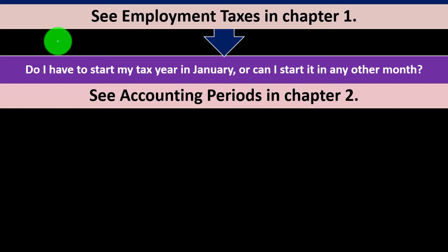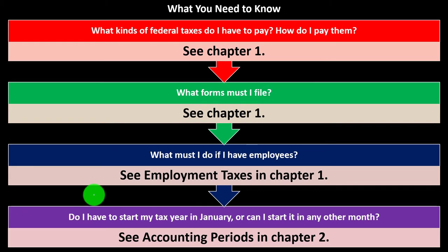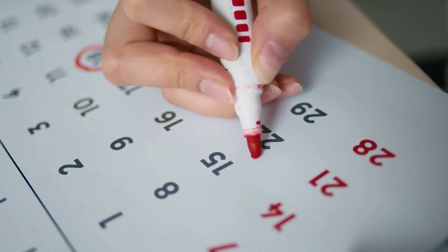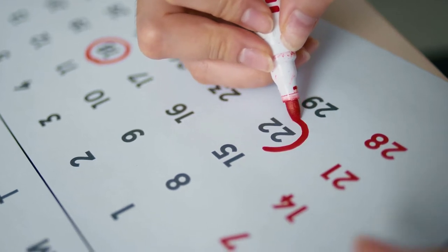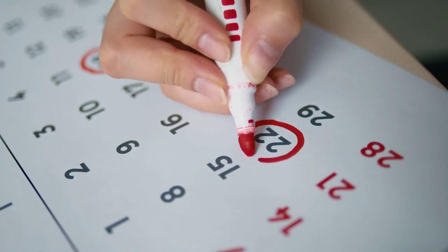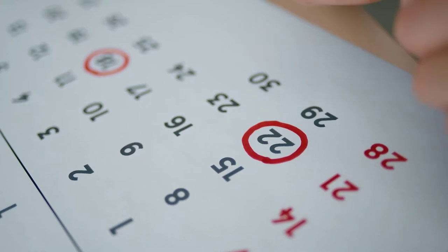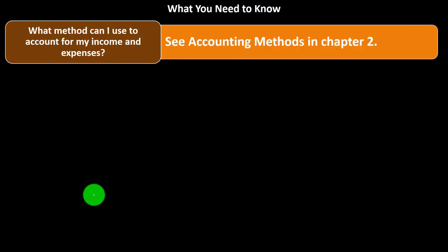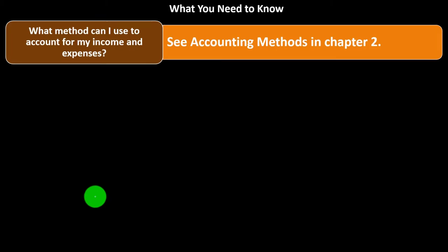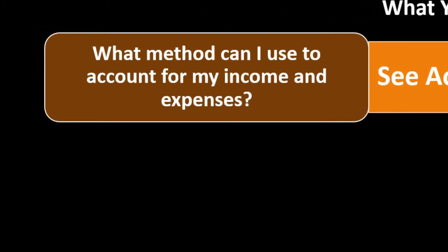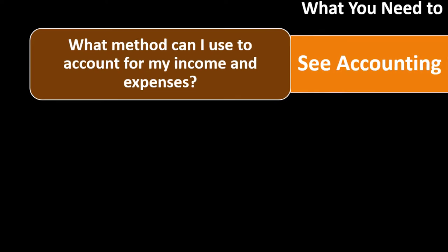Do I have to start my tax year in January, or can I start it in another month? You might have a fiscal year different from the calendar year. Normally, a sole proprietorship uses a calendar year — January through December — but there can be exceptions, and clients may have questions about using a different year.